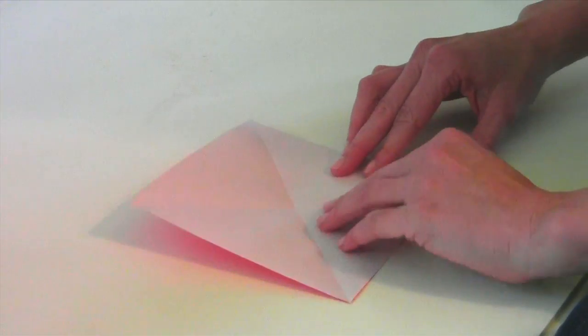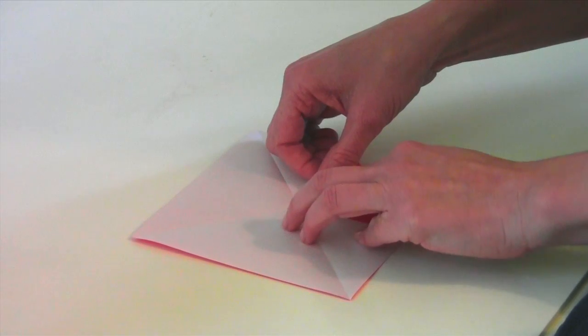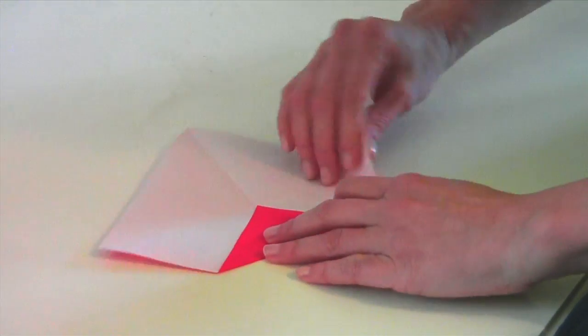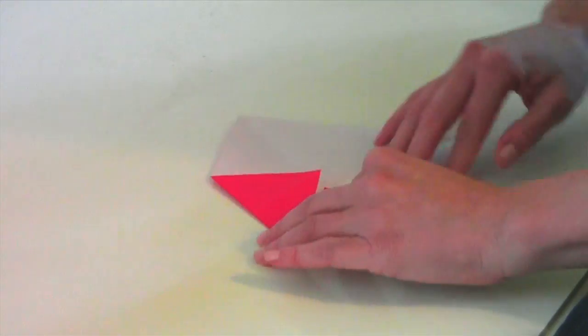You'll open it up and you'll have an intersection in the middle. You'll go from one corner and put the point directly in the middle where the other folds intersected, and you'll do that all the way around for all four corners.